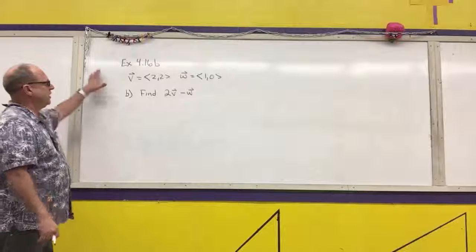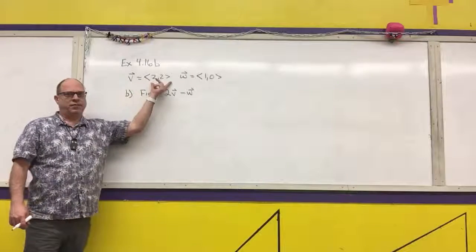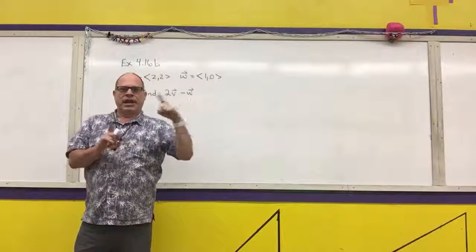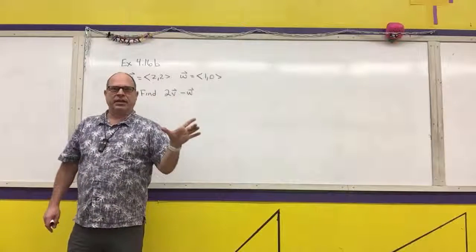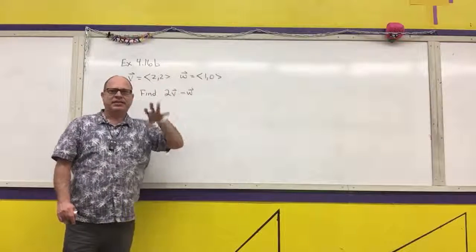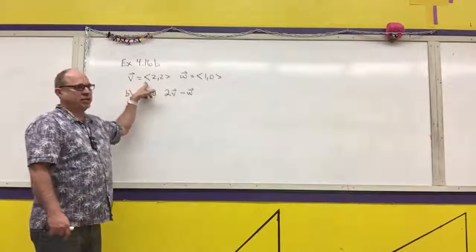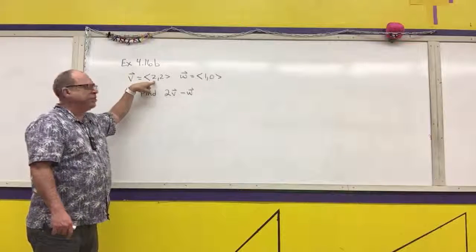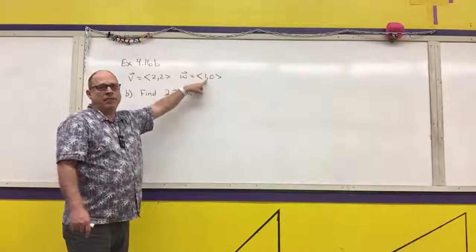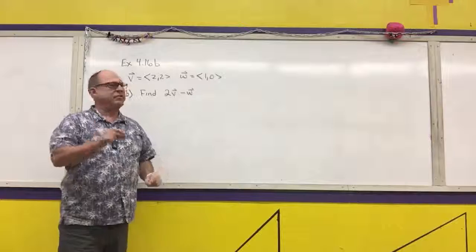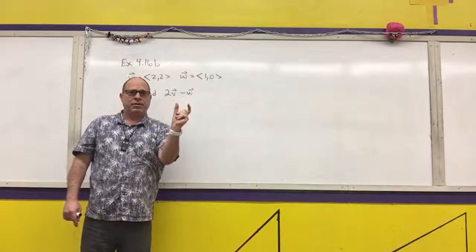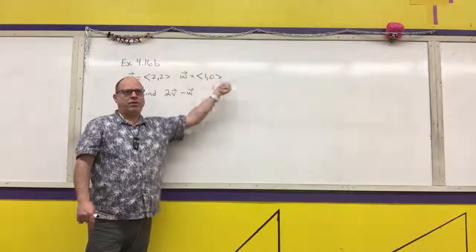In example 4.16, they show vector notation on a coordinate plane. A vector is a line segment with a specific direction and length. Vector notation says the vector starts in standard position at the origin. For example, the vector ⟨2, 2⟩ goes right 2 and up 2. The vector w = ⟨1, 0⟩ means go right 1 and up 0 — it doesn't have to start at the origin.